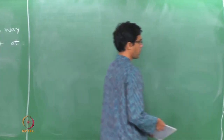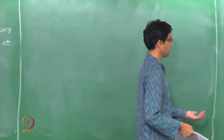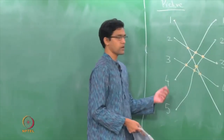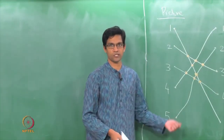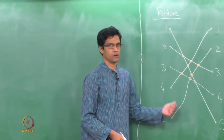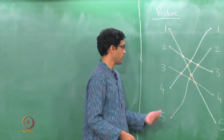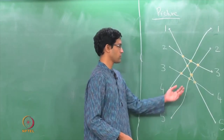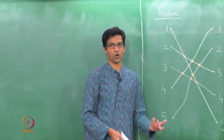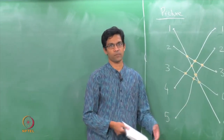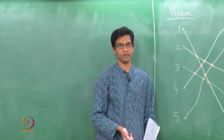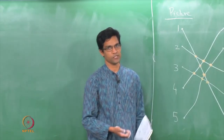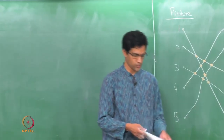This pictorial method is very useful for checking parity. To determine if a permutation is odd or even, draw its diagram and count the crossings: if the number of crossings is odd it is an odd permutation, and if the number of crossings is even it is an even permutation.